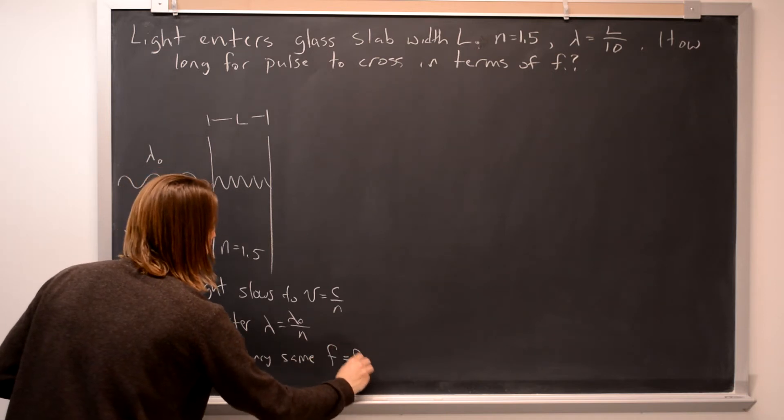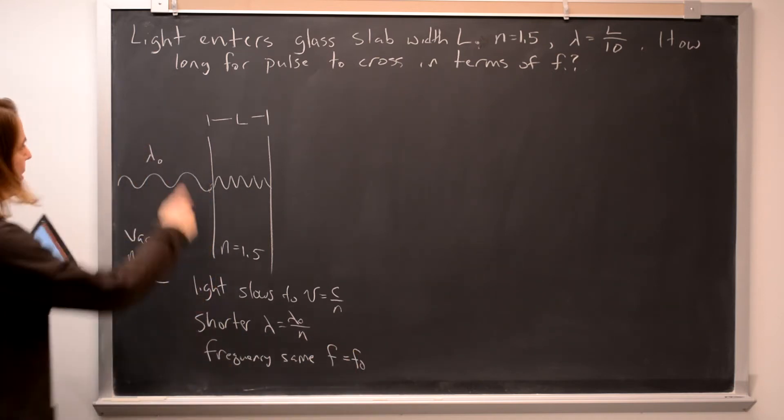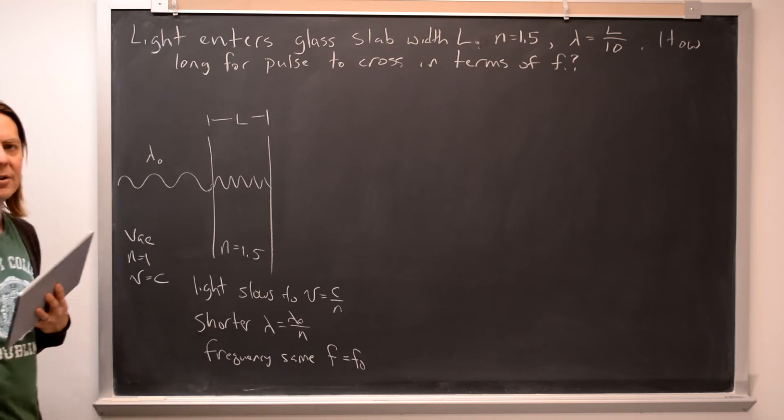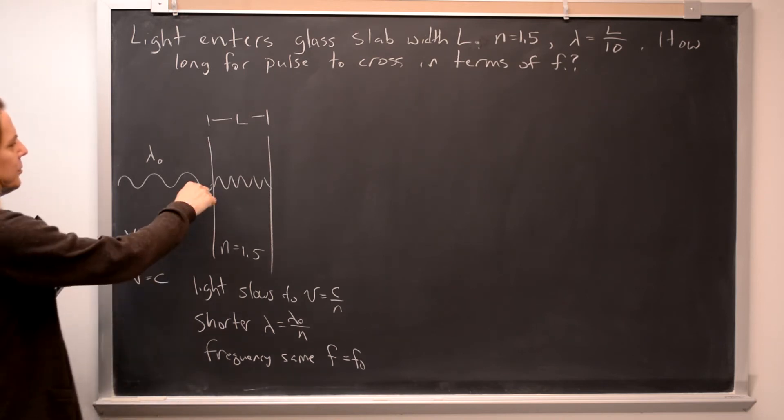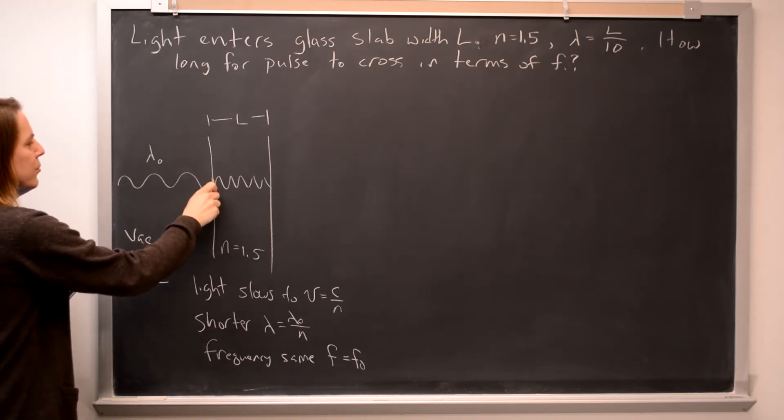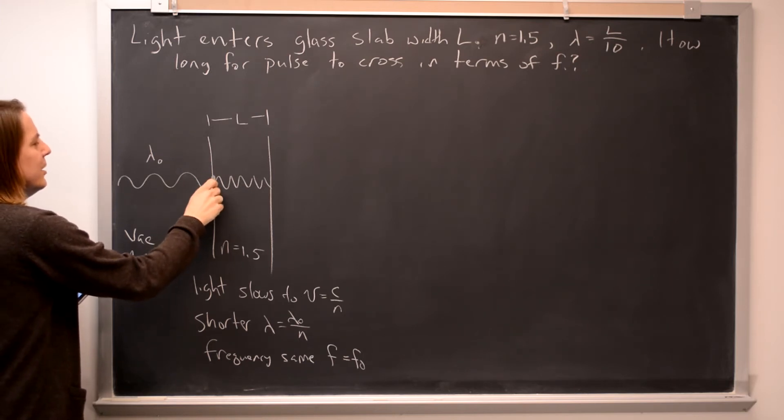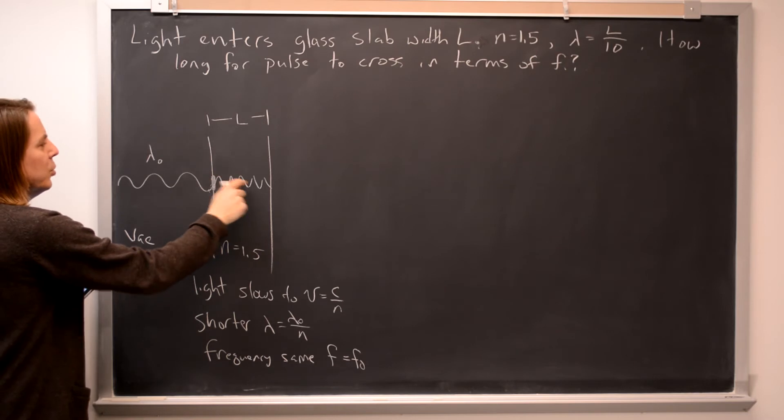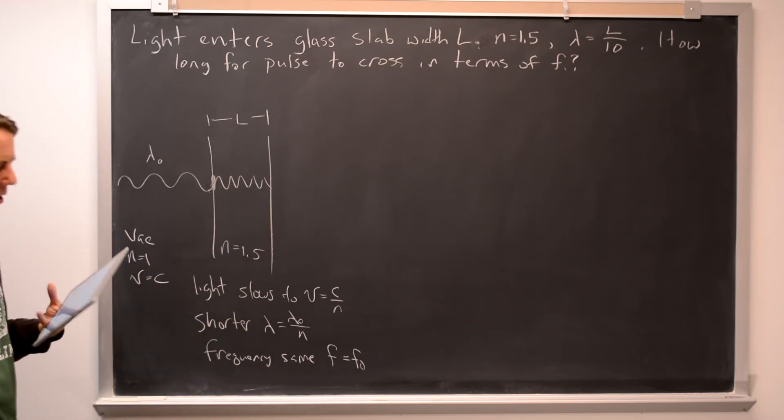So you could say F equals F minus. Whatever it is out here, it's going to be the same thing in there. It has to do this because this has to stay together on the boundary. Charges move, so the frequency of this moving up and down on this side and this side has to be the same, but in space they're separate, so the wavelength can change. That's the deep, deep reason.